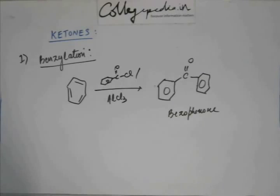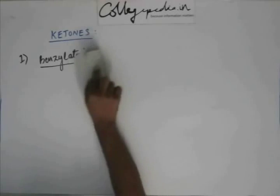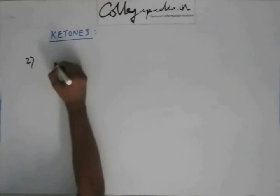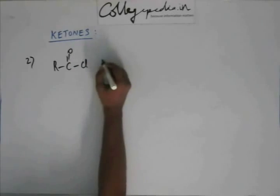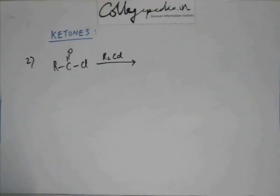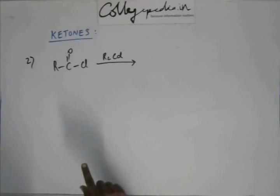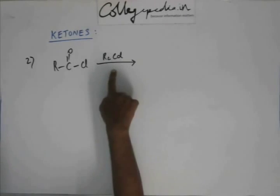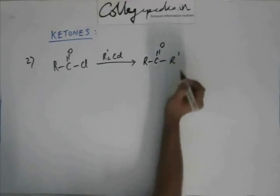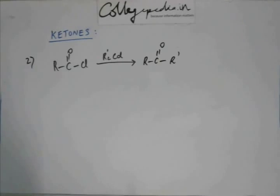Reaction number one: benzylation and acylation. The next reaction is when we take acyl chloride or benzyl chloride and make it react with dialkyl cadmium. We have seen this before when we studied Grignard reagent — parallel to that, I taught you dialkyl cadmium. When I taught you dialkyl cadmium, I taught you this reaction. We studied it as a reaction of dialkyl cadmium and now we are studying it as a method for preparation of ketones.